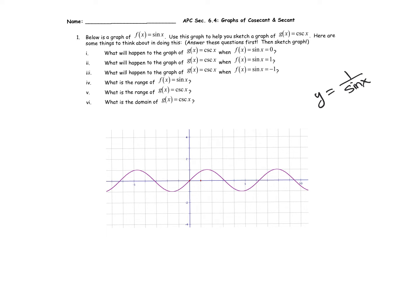Another way to think about this: cosecant of x, in terms of x, y, and r, cosecant of x is r over y. As we're getting close to zero, as the y value is getting close to zero, this fraction r over y is going to explode either towards positive or negative infinity. Going towards zero from the positive side, we explode towards infinity; from the negative side, towards negative infinity.